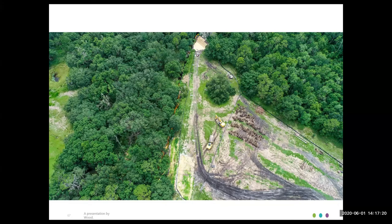Those trees on the left are actually the abandoned floodplain — that's where the river used to course through before it was ditched.